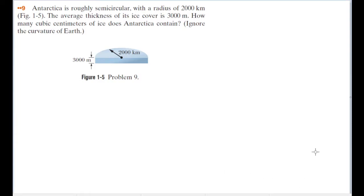Hey, look, another diagram problem. Alright, let's see what we've got here. Antarctica is roughly semicircular with a radius of 2,000 kilometers, according to figure 1-5 here, problem 9.